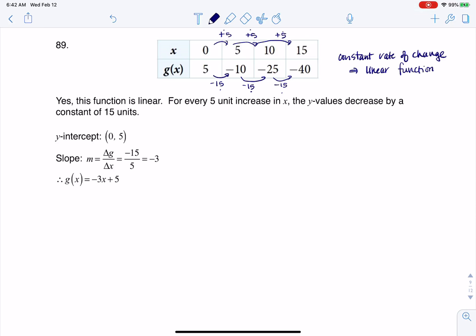And so those ratios, if I keep looking at those change in y over change in x, we're going to have a constant rate of change. And that constant rate of change, sure enough, is our slope.